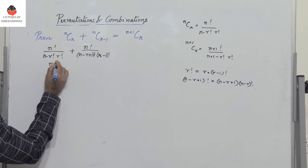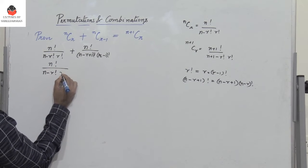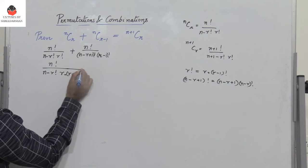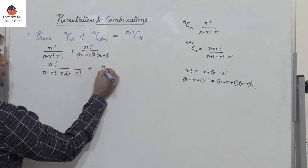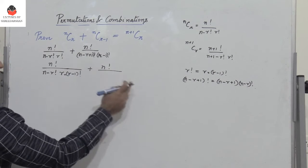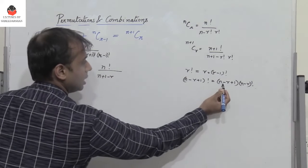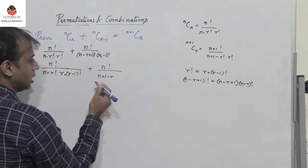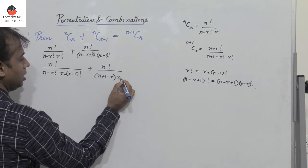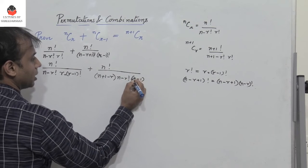Now let me replace these two in the expression. We have N factorial divided by (N minus R) factorial into R — written as R into (R minus 1) factorial — plus N factorial. And N minus R plus 1, I'm going to write as N plus 1 minus R, just interchanging the terms. So it becomes (N plus 1 minus R) into (N minus R) factorial into (R minus 1) factorial.